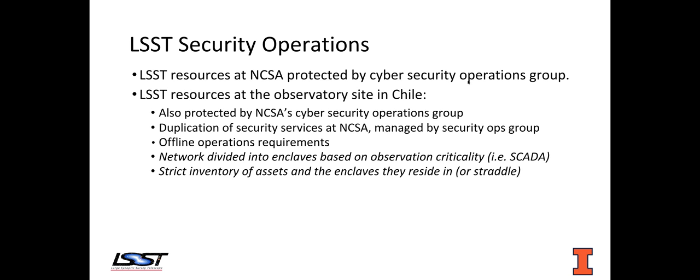At the observatory site, unlike LSST at NCSA, the network is divided into enclaves, and these enclaves are labeled by their observation criticality. For example, there's an enclave where the integrated control systems live to manage and operate the camera, telescope, and optical control system. We have a very strict inventory of assets and the enclaves that they reside in — this is incredibly important to understand what is on the network and where it lives, so that we understand the proper security controls to apply to those assets.